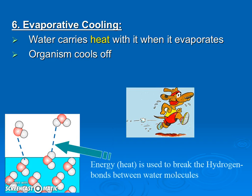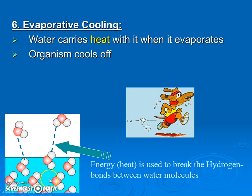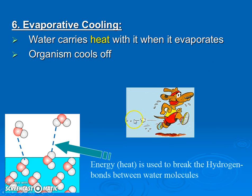The sixth property is called evaporative cooling — the fact that water can carry heat away when it evaporates. This is how organisms cool off. Humans sweat, and when that sweat on our skin evaporates, the water molecules break away from liquid to gas and pull heat away from your body. It's the same reason dogs pant — the water on the tongue evaporates and carries the heat away. We call this evaporative cooling.